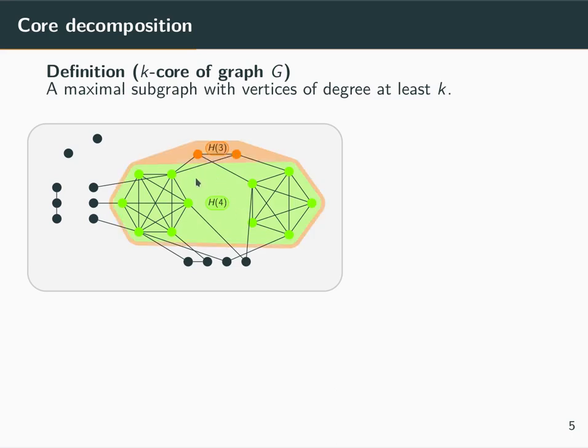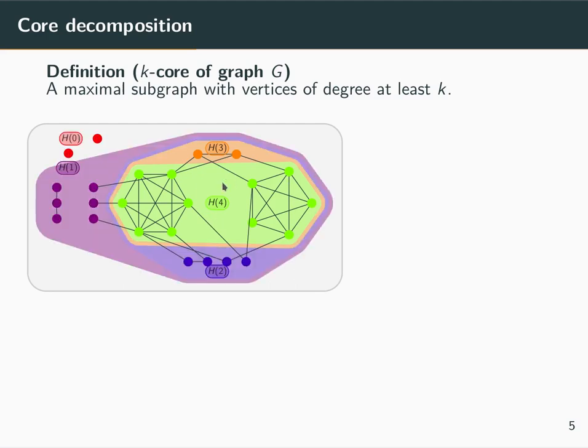This is also part of the three-core which contains all vertices having at least three edges to the same subgraph and contains also the four-core as its superset.